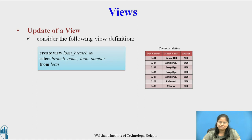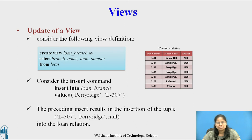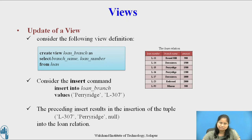Now consider the following view definition: CREATE VIEW loan_branch AS SELECT branch_name, loan_number FROM loan. We will represent this as an insertion into the relation loan, since loan is the actual relation from which the view loan_branch is constructed. We must therefore have some value for the amount attribute; this value is a null value. Thus, the preceding insert results in the insertion of the tuple (L307, Periresh, null).